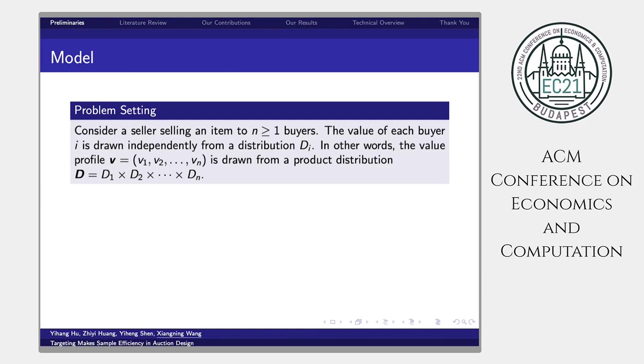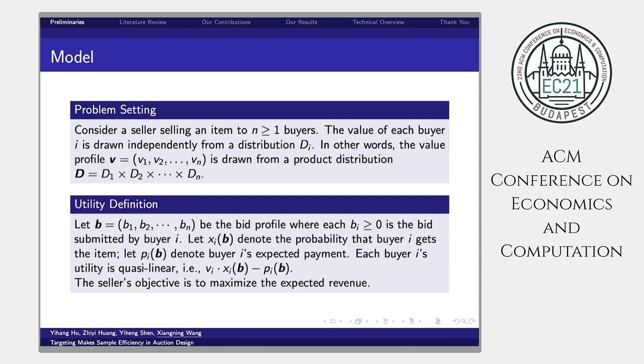The value of each buyer is assumed to be drawn independently from a distribution. In other words, the value profile is a value vector that is drawn from a product distribution D. Let b be the bid vector where each bi is non-negative and is the bid submitted by the buyer bi.